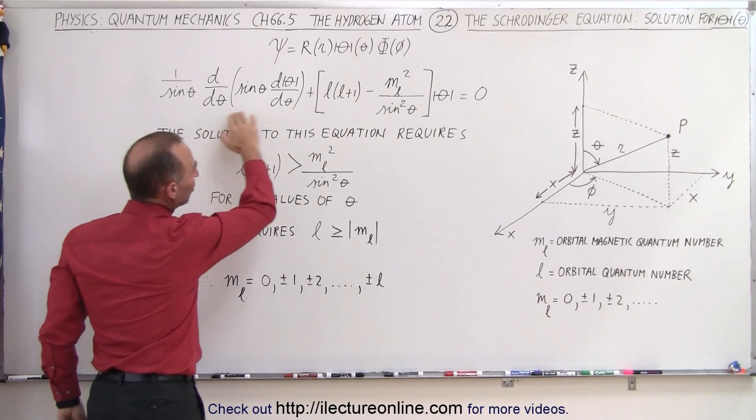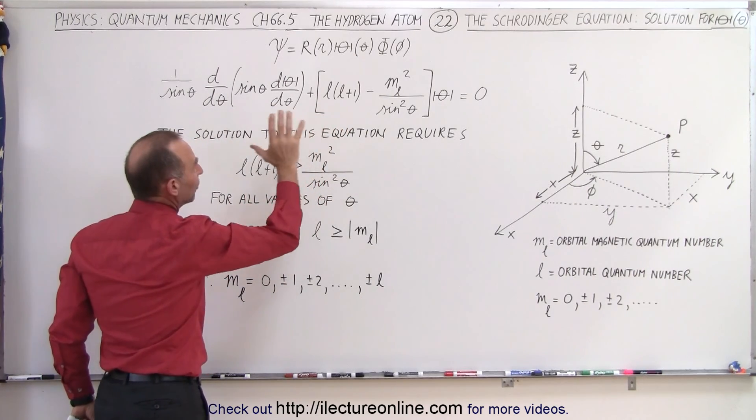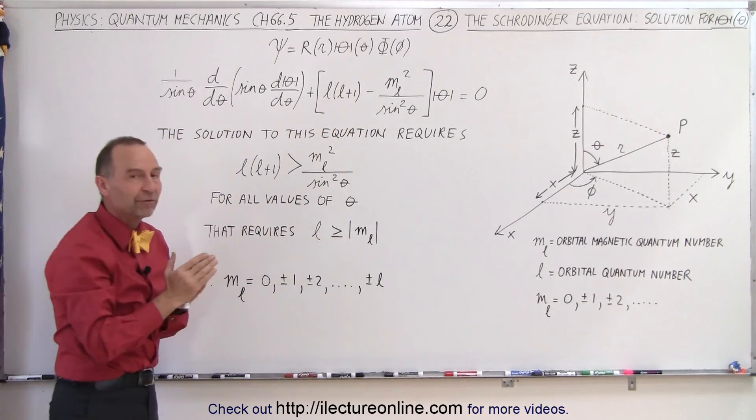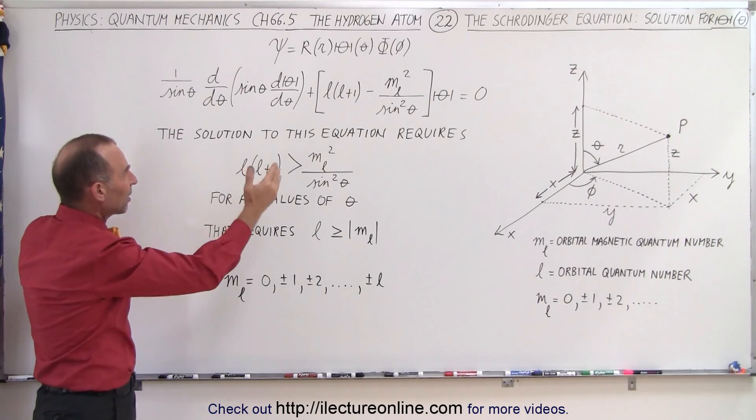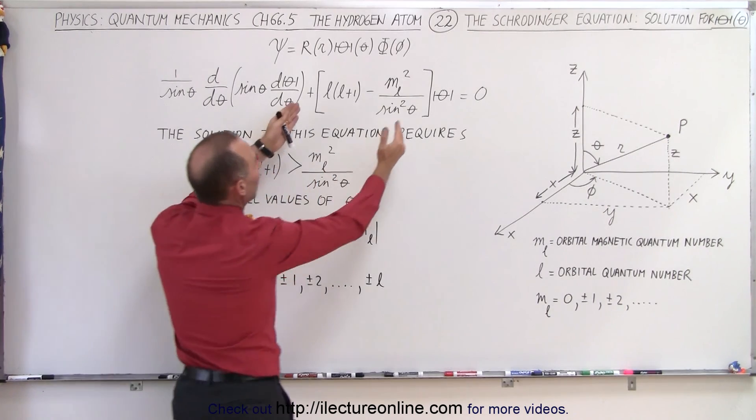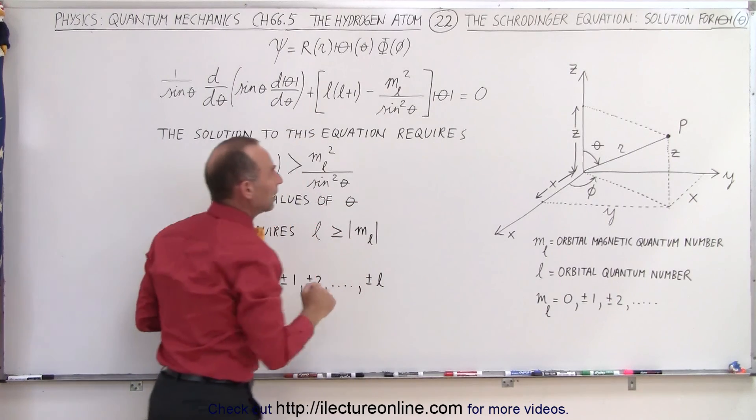Now there's the equation that we had before, and notice that the only way that we can find a solution that makes sense out of this equation is if the quantity within brackets here is a positive quantity.